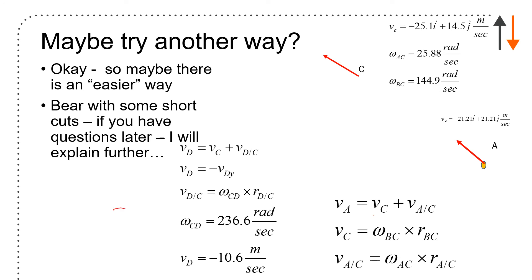Velocity of D with respect to C is omega CD crossed with RDC. Omega CD is 236.6 rads per second. Velocity of D is minus 10.6 meters per second. So I have all of this and I can draw that picture.